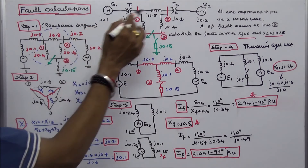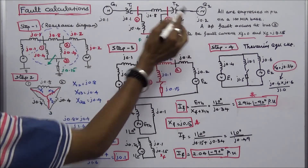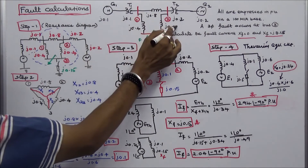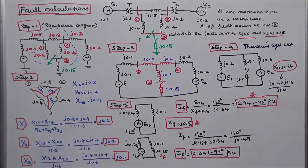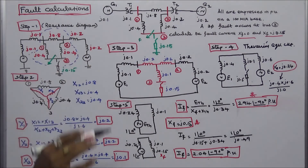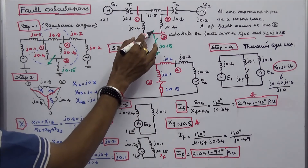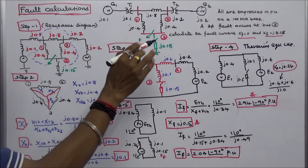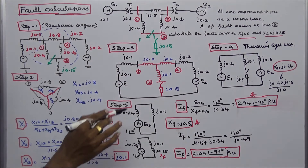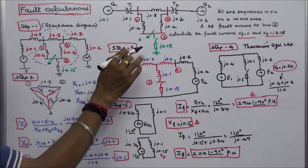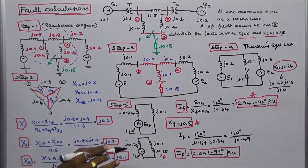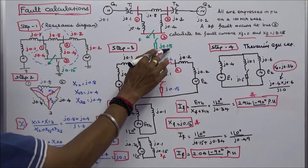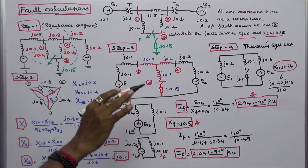Generator reactance is J.1 and J.2. Transformer reactance is J.1 per unit and J.2 per unit. The question is: a 3-phase fault occurs at bus 3. Calculate the fault current when fault reactance Xf is equal to 0, and when Xf is equal to J.15.